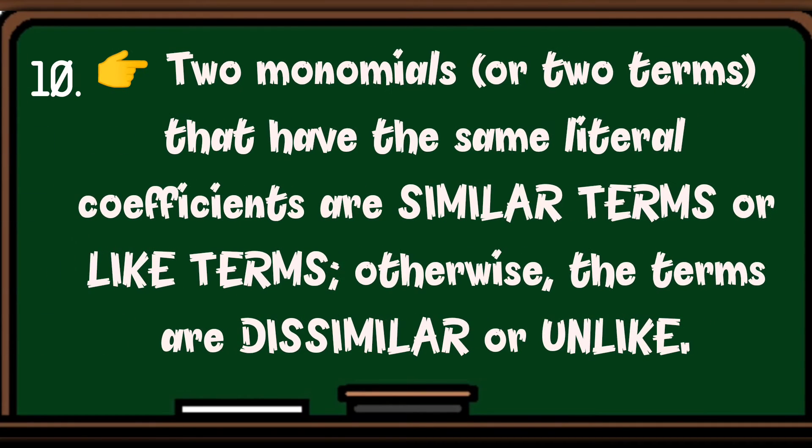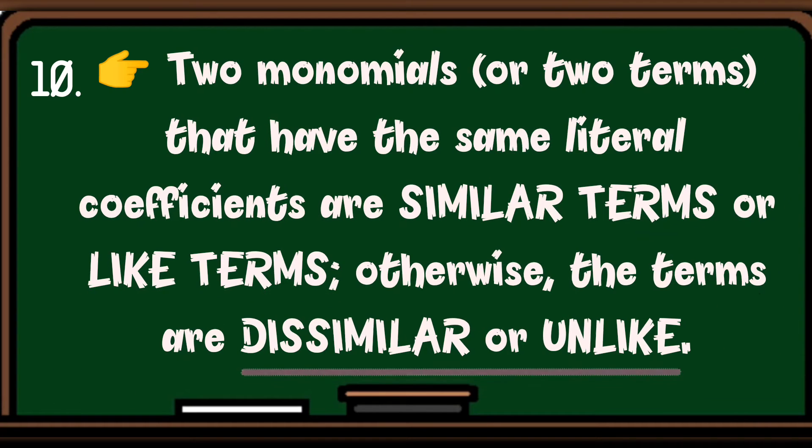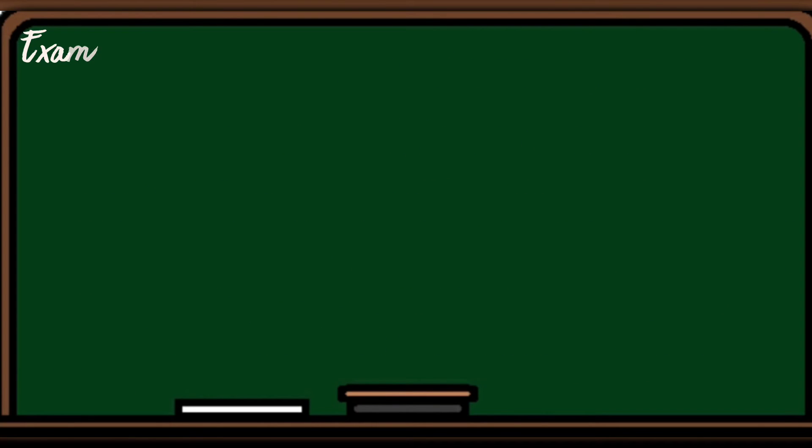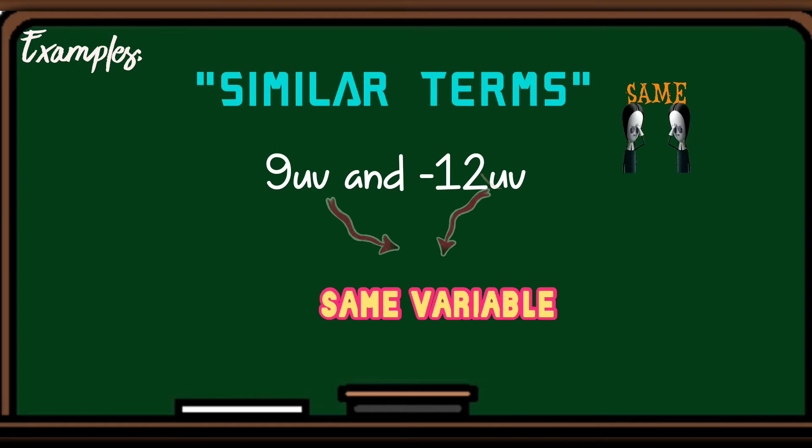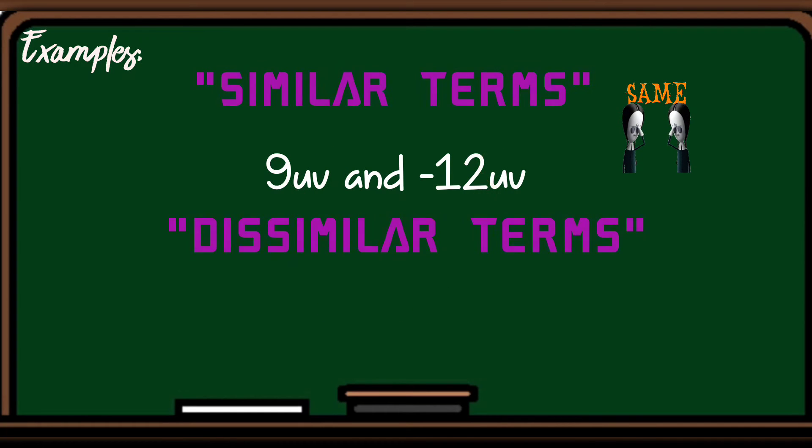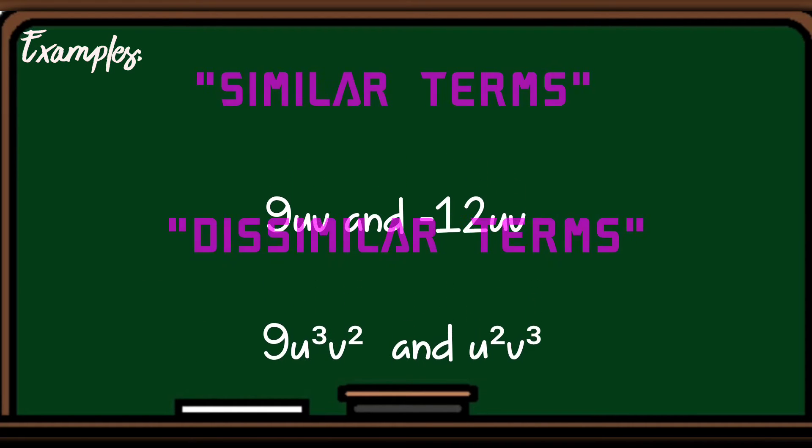Number ten, two monomials or two terms that have the same literal coefficient ay tinatawag natin similar terms. Pag magkaiba ang literal coefficients nila, dissimilar. Example, similar terms: 9uv and negative 12uv. Kung mapapansin nyo, pareho ang variable na meron sila. Dissimilar terms: 9u cubed, v squared, and u squared, v cubed. Kaya siya tinawag na dissimilar terms kasi magkaiba ang degree ng mga variable na meron sila.